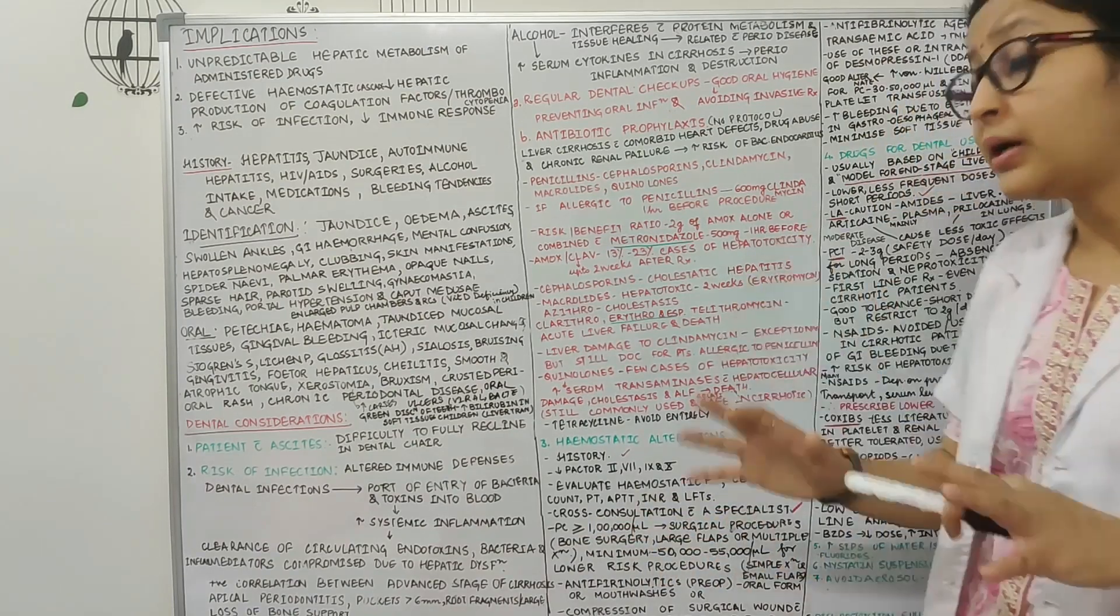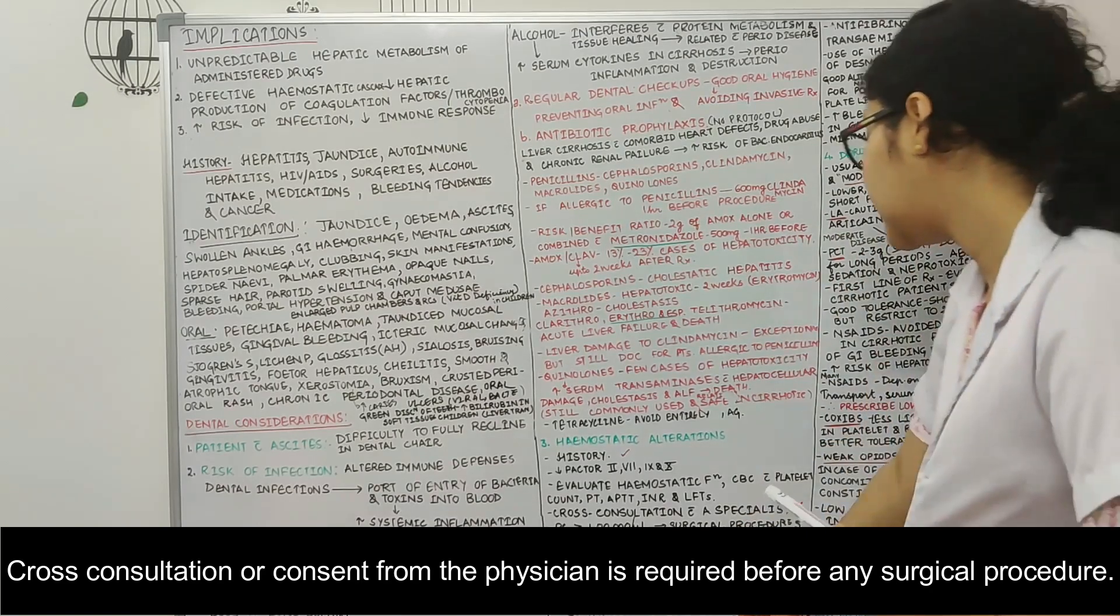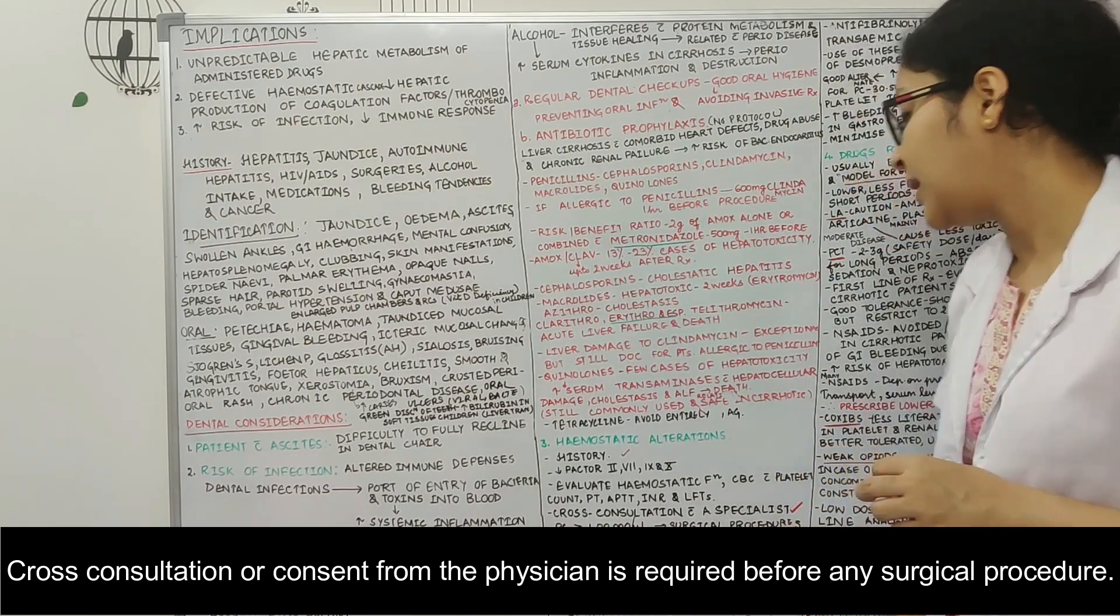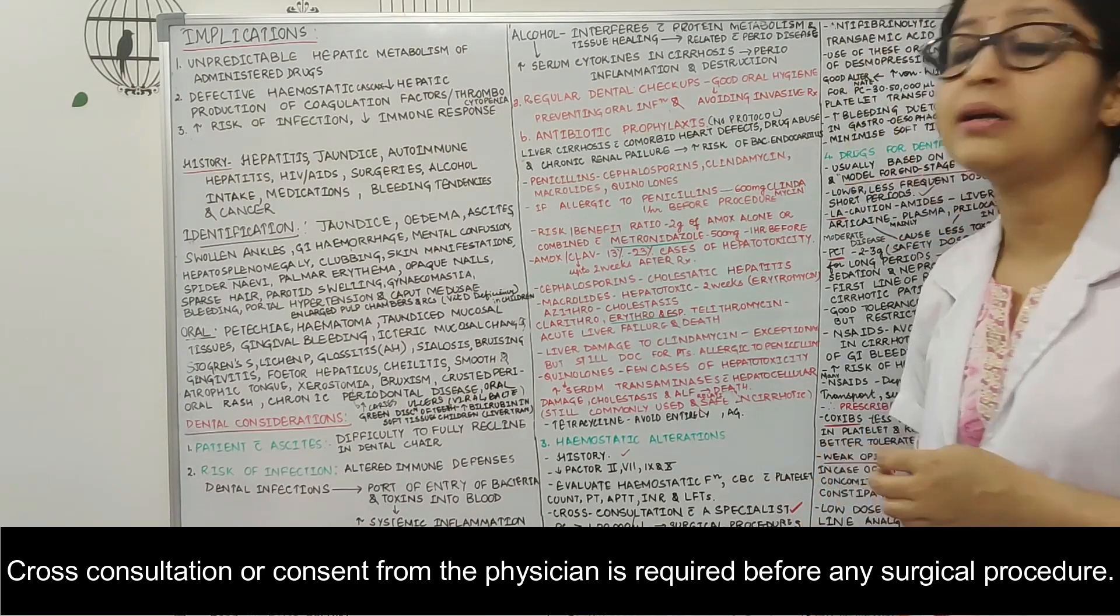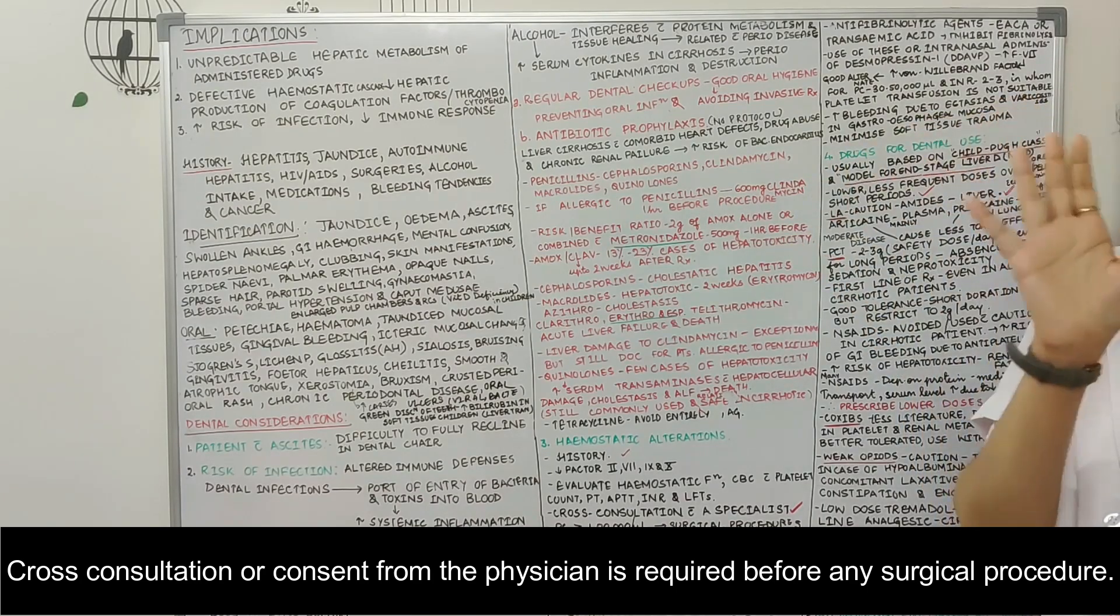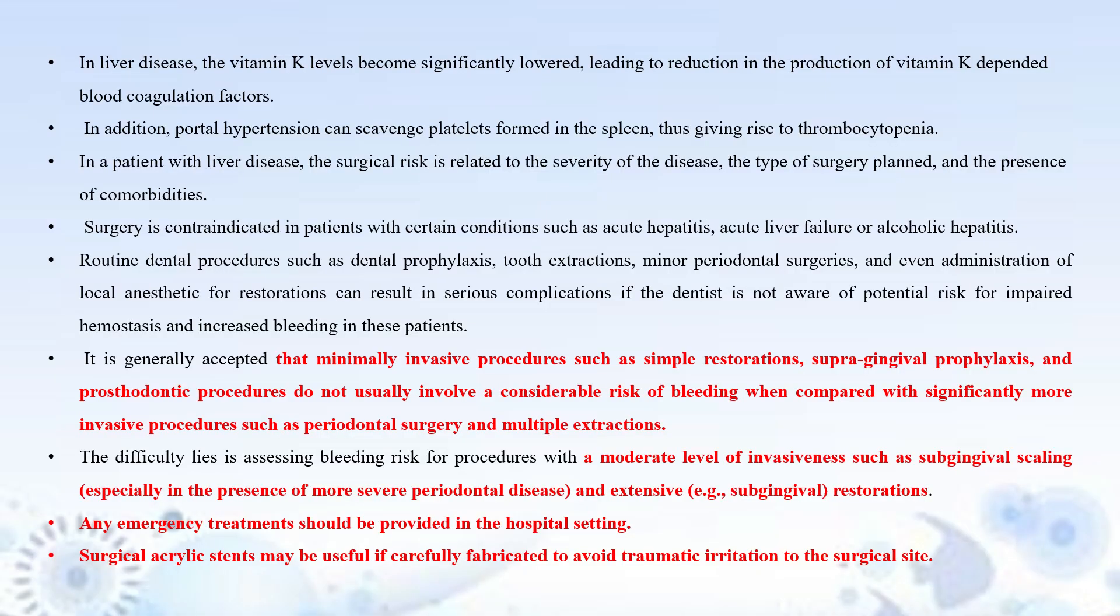Then you can also prescribe anti-fibrinolytics pre-operative to such patients before performing any kind of surgery. Also in pre-transplant patient, whenever you are doing extraction, if the INR is less than or equal to 2.5, INR normally is one, and also the platelet count is greater than 30,000 per microliter, in such cases when you are doing a simple extraction you can basically compress a surgical wound with the gauze for some time. Anti-fibrinolytic agents such as EACA or tranexamic acid can be given in such patients, they inhibit fibrinolysis.